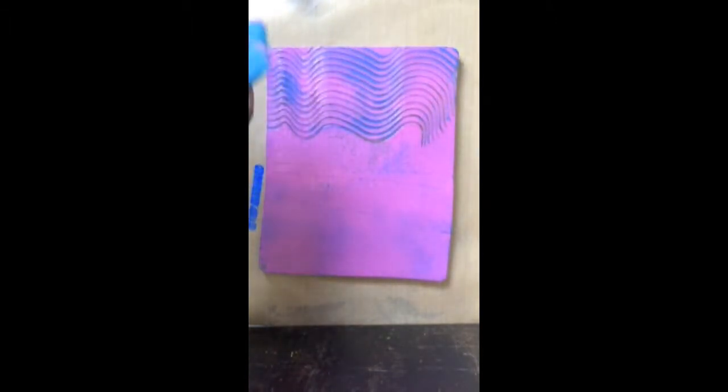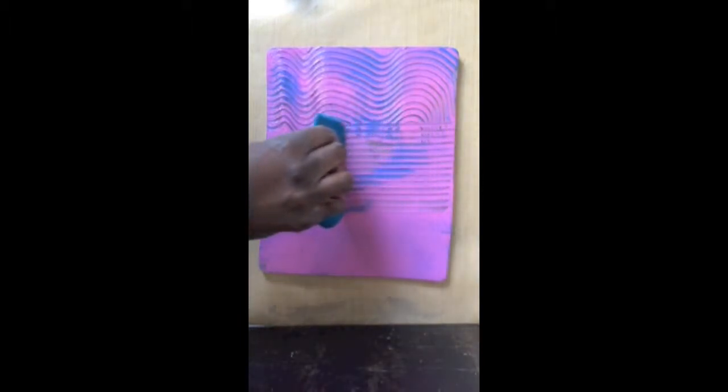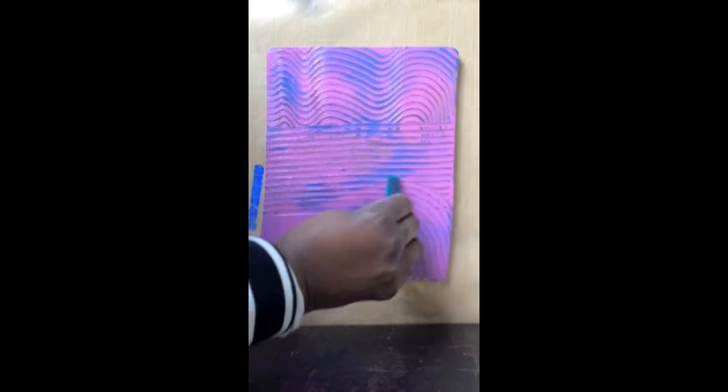So here I'm using my comb. That's a catalyst wedge, they call it. But I use it to comb through the paint to make a design. Simple design.